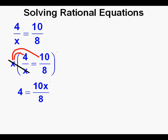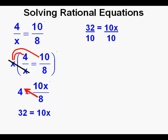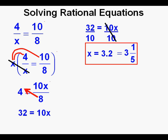Then we can cross multiply the 8, which is really multiplying both sides of the equation by 8. That gives us 32 equals 10x. Next we divide both sides of the equation by 2. The 10 over 10 cancel on the right side, and that gives us our answer: x equals 3.2, which can also be written as the mixed number 3 and 1 fifth.